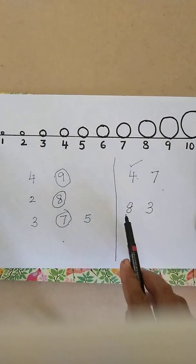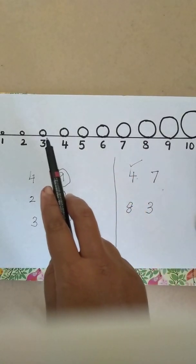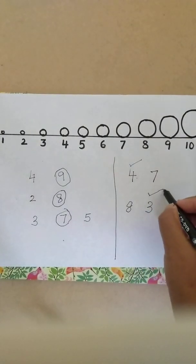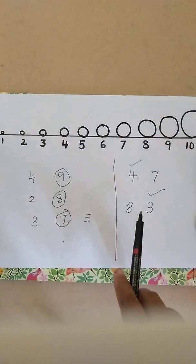Which number is smaller, 8 or 3? Look at the number line. Which has a smaller circle, 8 or 3? 3, correct. So this is how your child will learn to identify the smaller number and the bigger number with the help of this number line.